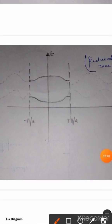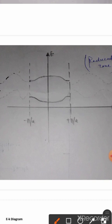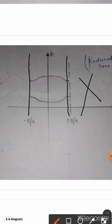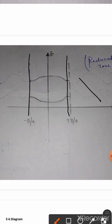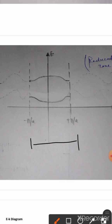Here you see the reduced zone. The dotted portion shows our previous graph — our periodic zone. I reduced the E versus K relation to the range -π/a to +π/a by only keeping that portion, which is why this is known as the reduced zone. This region from -π/a to +π/a is known as the first Brillouin zone.